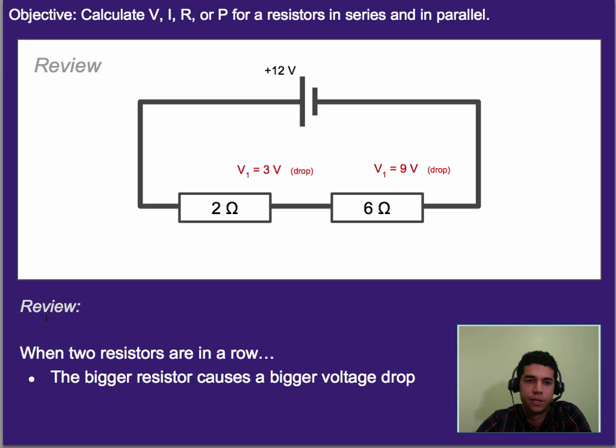So a little bit of review first. We talked about before this idea if you have two resistors in a row like this, that the bigger resistor causes a bigger voltage drop. That's because voltage is essentially energy, and so if it's a bigger resistor, it's harder to get through and requires more energy to go through. As a result, this gets a smaller voltage drop, this gets a bigger, but we noticed that in total, it adds up to the total amount of voltage.